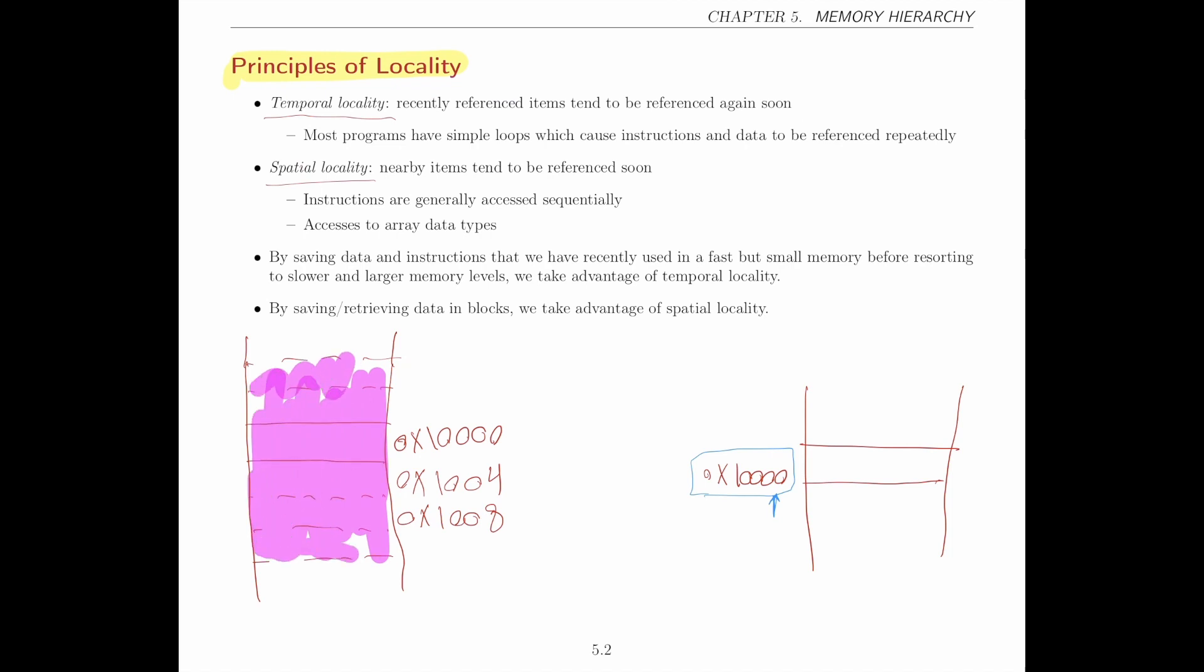Why is this true? Why is it that when we access something, we are also likely to access data around it? Well, a lot of time data are kept in the memory as arrays, so data are kept sequentially in memory with a sequence that has some meaning, like the index of the array. Therefore, when we look at one element of this array, oftentimes we are also going to look at the other elements in that array.